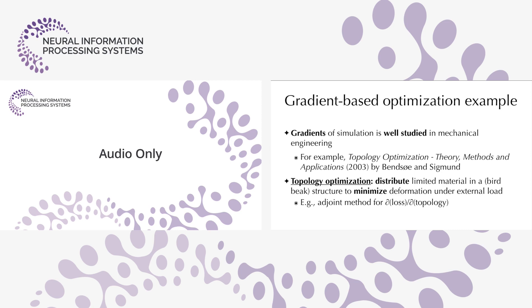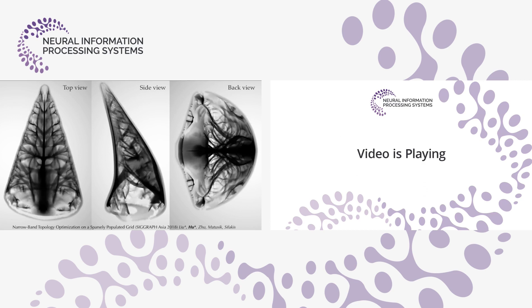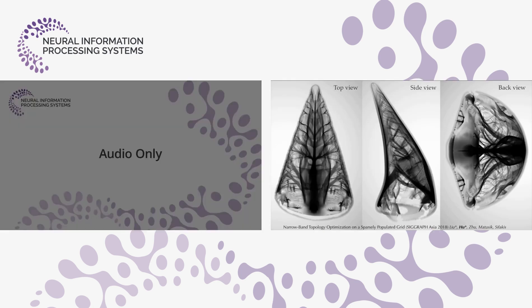Gradients of simulation are well studied in mechanical engineering. One typical example is topology optimization, where you distribute limited material in a structure to minimize deformation under external load. You need the adjoint method to compute the partial derivative of the loss function with respect to the topology, because you must solve for displacement under external load — a linear system solve. Here I'm showing a large topology optimization example, from initial guess to the final optimized structure.